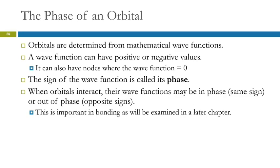So we determine those from mathematical wave functions. A wave function can have positive or negative values, and it can have nodes where it is equal to zero. So the sign of the wave function is called its phase. So a wave on a string can be above the middle line or below. It can be positive or negative.